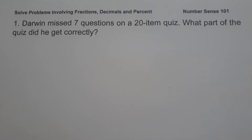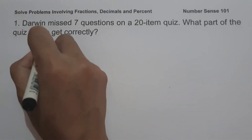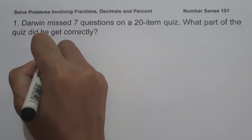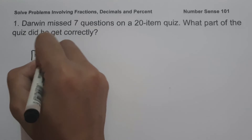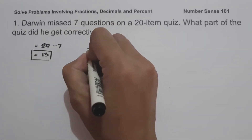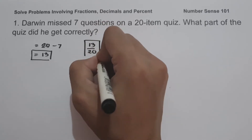On the first example, Darwin missed seven questions on a 20-item quiz. What part of the quiz did he get correctly? The first thing we are going to do is find the number of questions he answered correctly. Since there are 20 items and he missed seven questions, let us have 20 minus 7, and that is 13. So the part of the quiz he got correctly is 13 over 20.